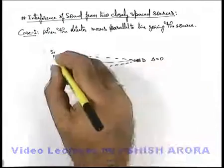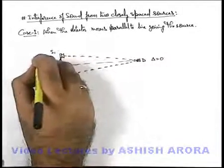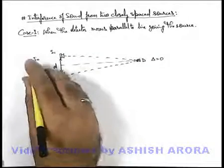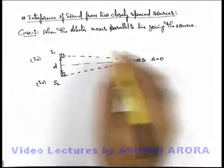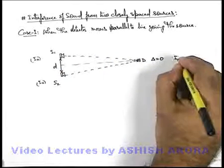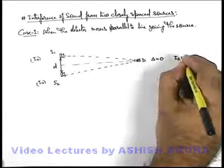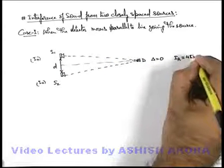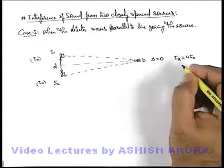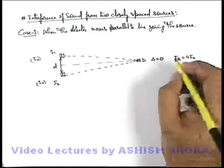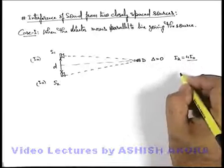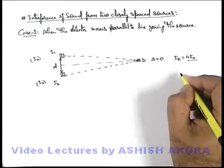If the two sources are producing sound of intensity I₀ each — equal intensity at the location of the detector — then the resulting intensity at this position can be written as 4I₀. As we have studied in the previous section, at the point of constructive interference the resulting intensity becomes 4I₀.